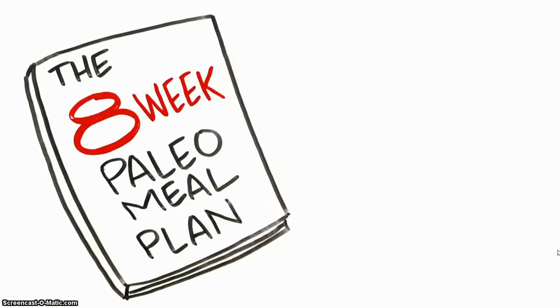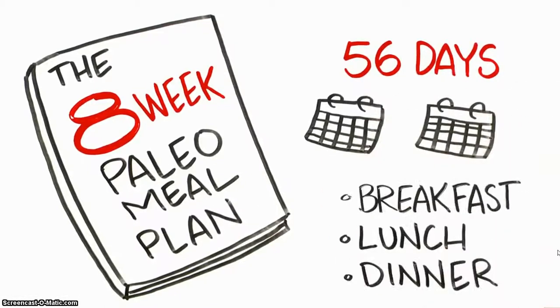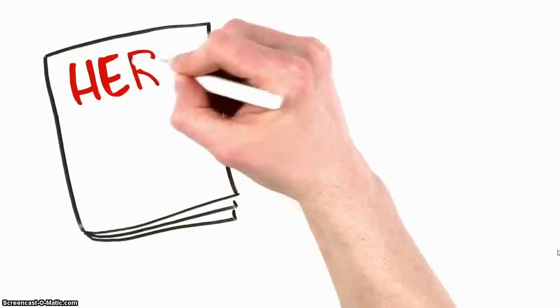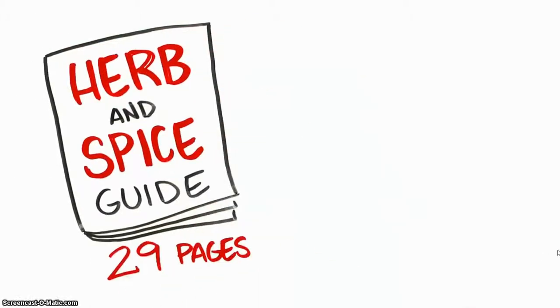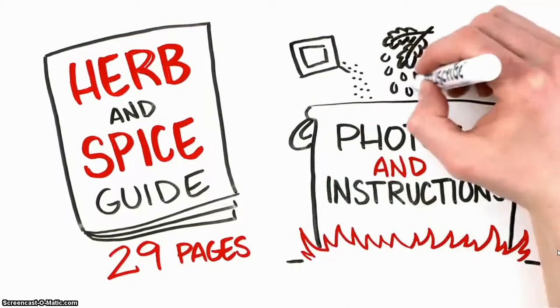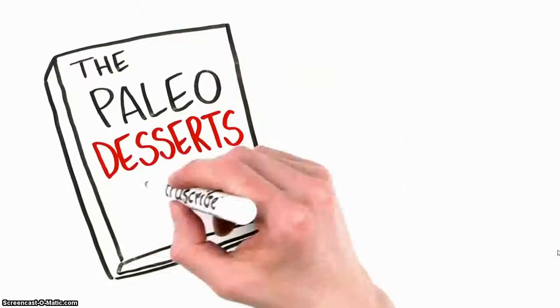Another free bonus: the Eight-Week Paleo Meal Plan. This comprehensive 56-day meal plan guides you through over two months worth of breakfast, lunch, dinner, and snacks - a solidly valuable tool. Plus you'll get the Herb and Spice Guide: 29 pages of photos and instructions for the best ways to use herbs and spices in your paleo kitchen.